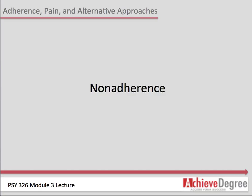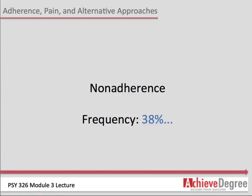The annual economic impact of non-adherence is estimated to be over $100 billion in additional treatment, hospital costs, and lost productivity. DiMatteo, in 1994, found that at least 38% of patients do not follow short-term treatment plans, and more than 45% fail to adhere to recommendations for long-term treatment.